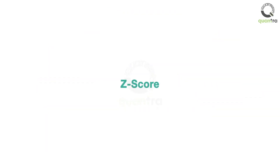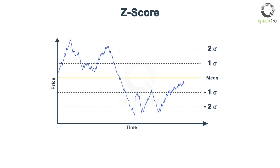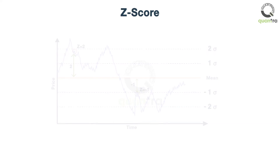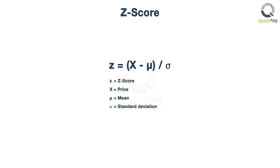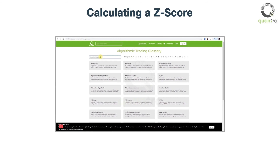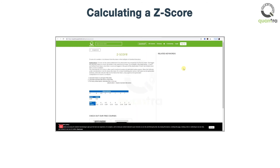Now, let us look at the concept of Z-score. Z-scores indicate the number of standard deviations the price is from the mean. The Z-score shows numerically how the different members in a group differ from the mean of the group. Z-score is calculated using the given formula. To understand how a Z-score is calculated, please refer to the glossary section.